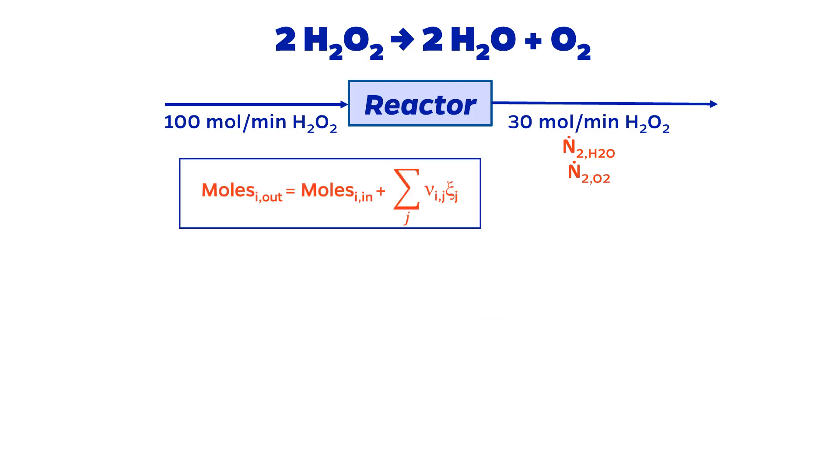Let's start with hydrogen peroxide. Remember that all balances have the form out equals in plus stoichiometric coefficient times extent, and that the stoichiometric coefficient is negative for reactants. For H2O2, we have 30 equals 100 minus 2 times the extent of reaction. Solving for the extent of reaction, I obtain that it equals 35.